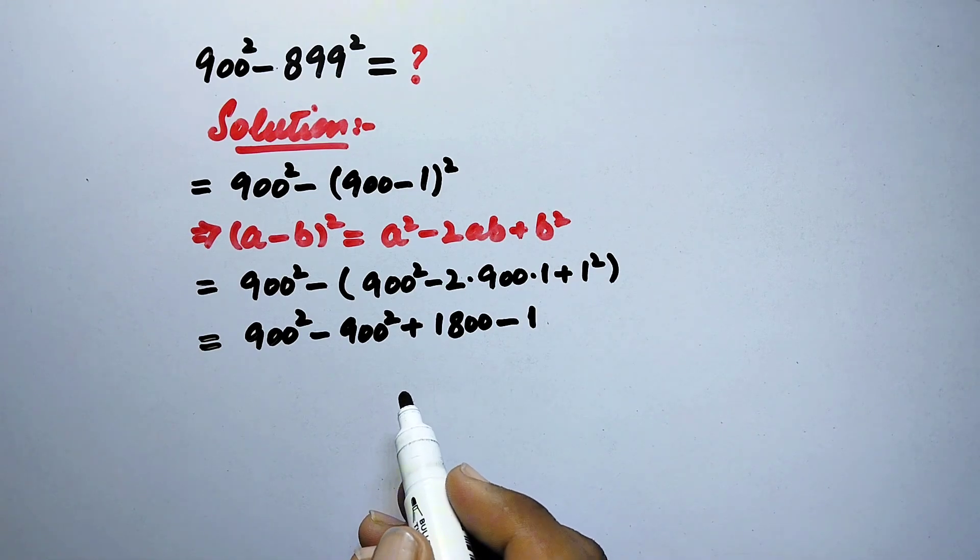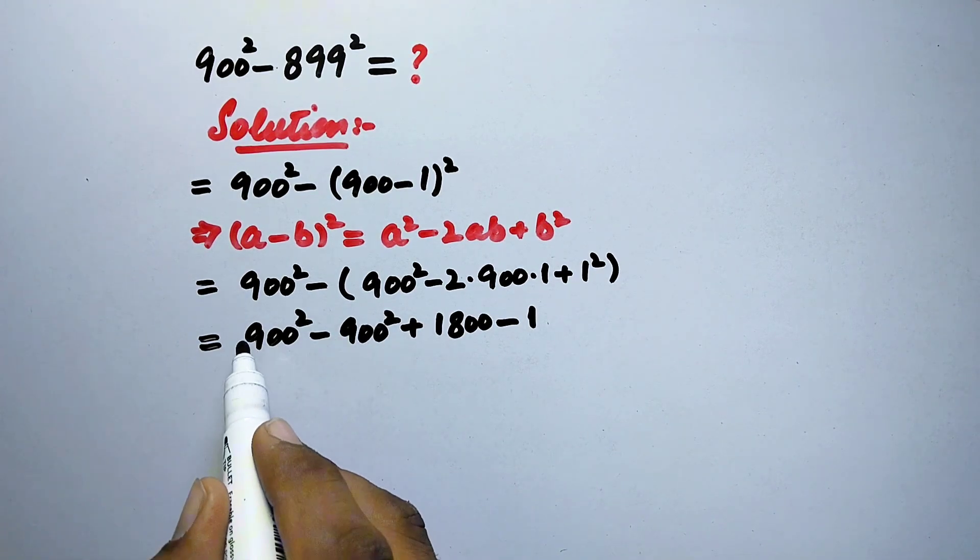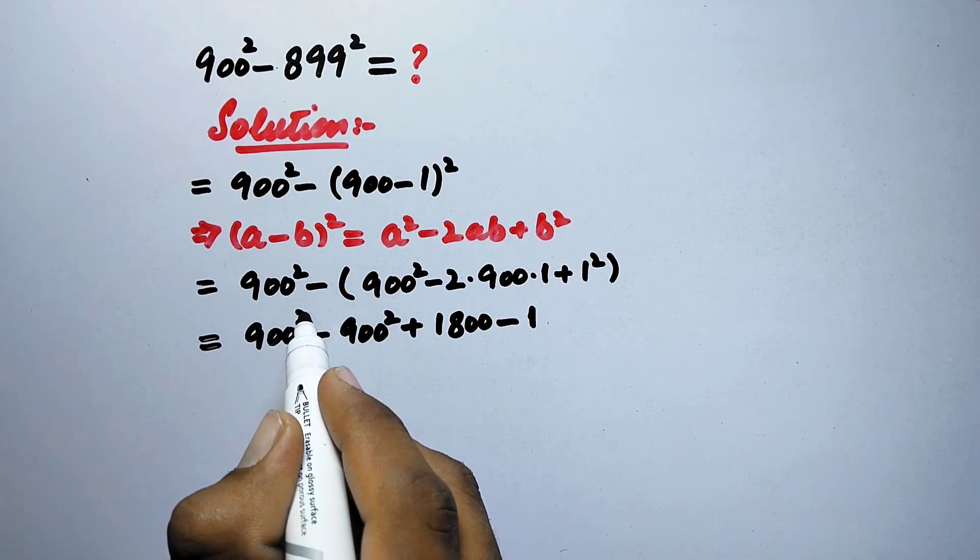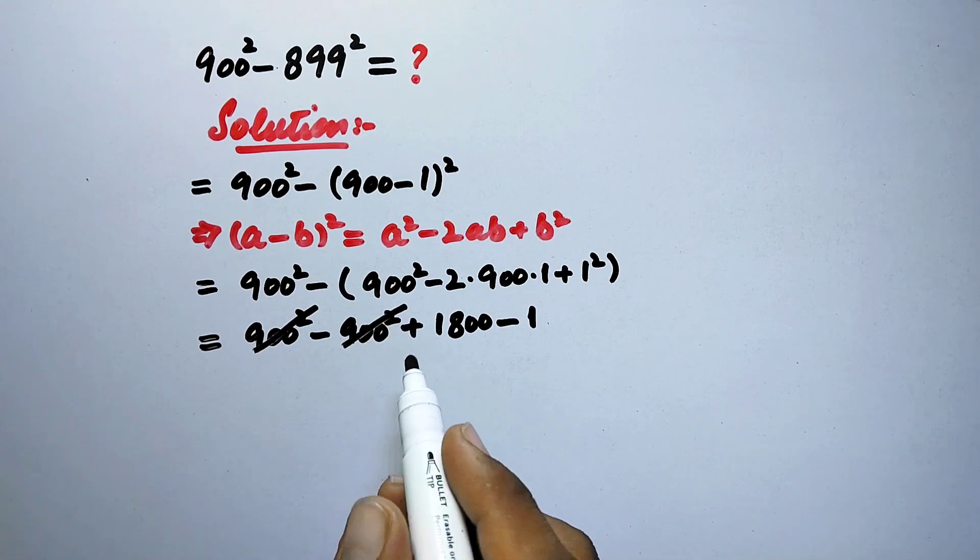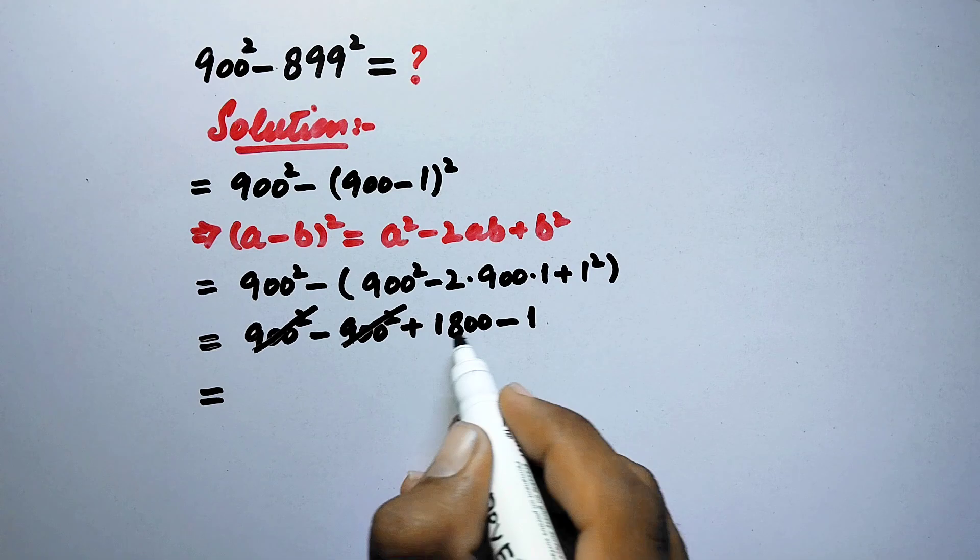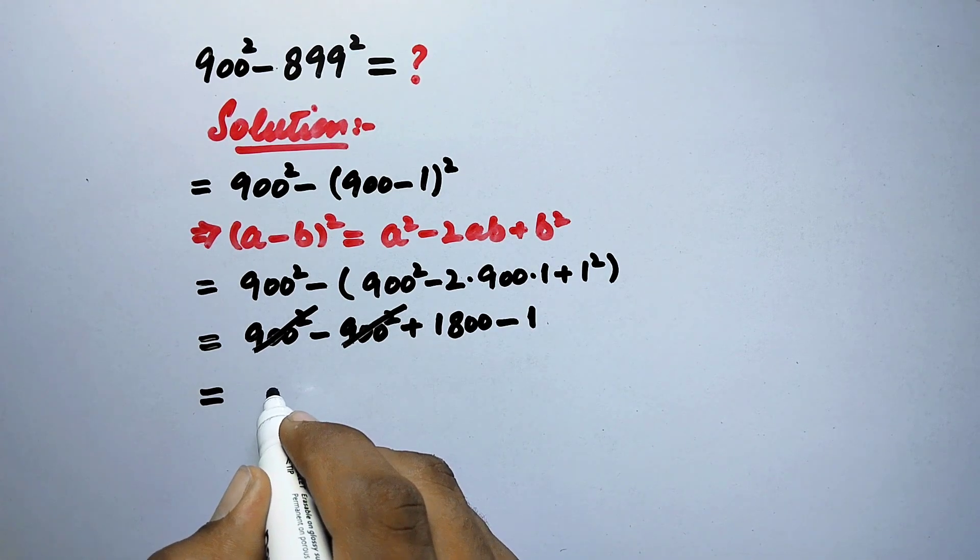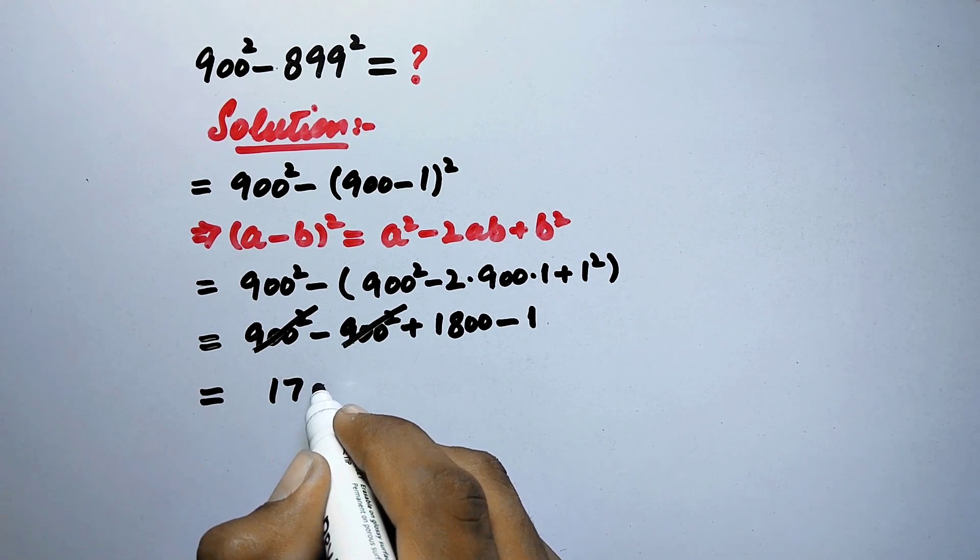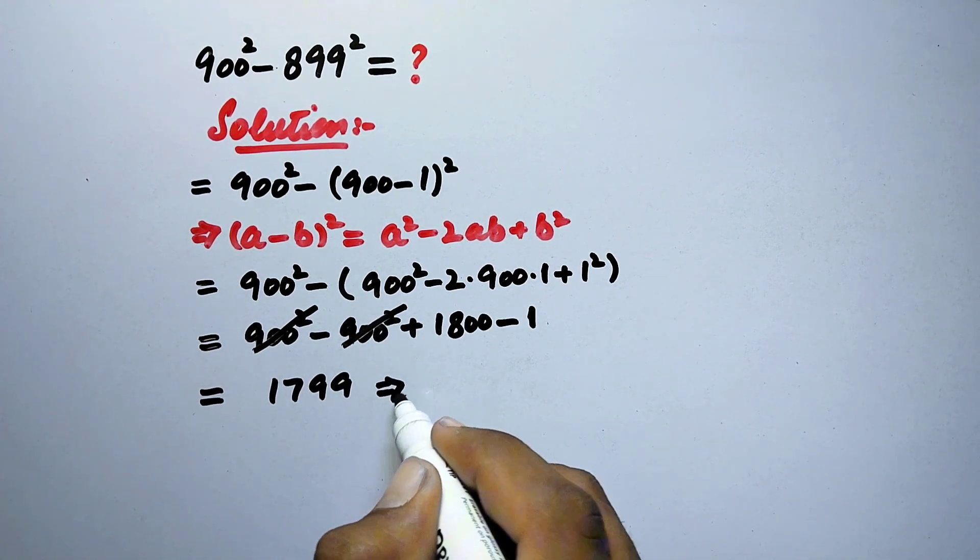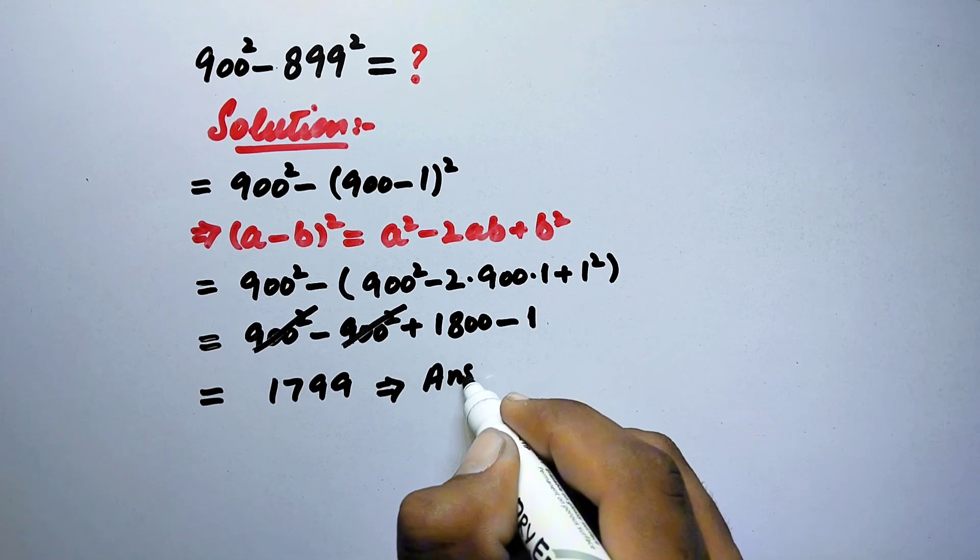So now here we can see that this is positive 900² and this is negative 900², so they will cancel out each other, and here 1800 - 1 will be equal to 1799. And that is our final answer.